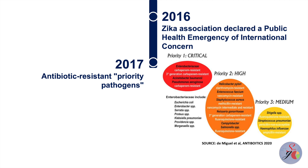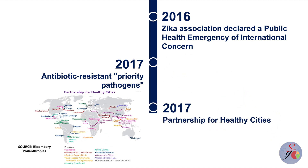In 2017, WHO published its first-ever list of antibiotic-resistant priority pathogens — a catalogue of 12 families of bacteria that pose the greatest threat to human health. The list was drawn up to guide and promote research and development of new antibiotics as part of WHO's efforts to address growing global resistance to antimicrobial medicines. In the same year, the Partnership for Healthy Cities was launched, including 70 cities with over 300 million inhabitants in total, aiming to put in place policies and programs to prevent road traffic injuries and diseases like cancer, heart disease, diabetes and lung diseases.